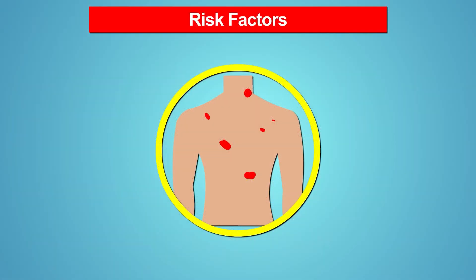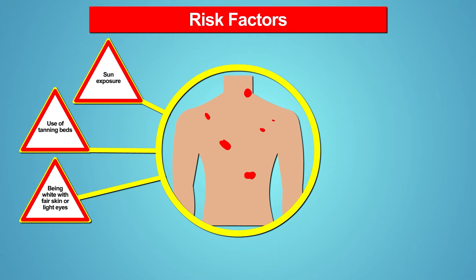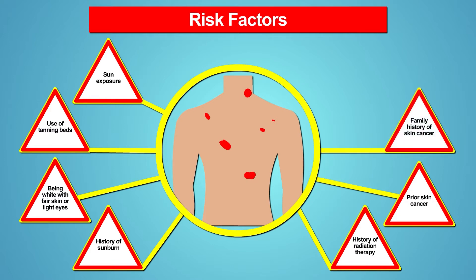Anyone can get non-melanoma skin cancer. Your chance may be higher if you spend a lot of time in the sun, use tanning beds, are white with fair skin or light eyes, have had frequent sunburns, have had radiation therapy, have a personal or family history of skin cancer, or have a weaker immune system due to illness or drugs — such as drugs given to people who have had organ transplants or drugs that control autoimmune diseases.